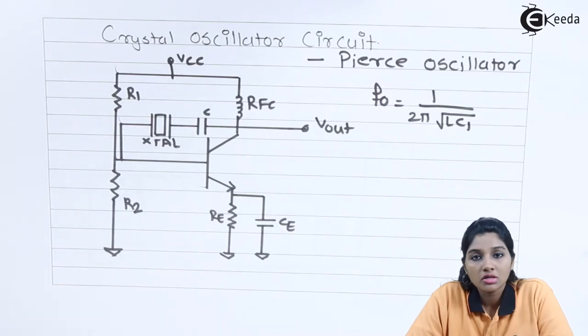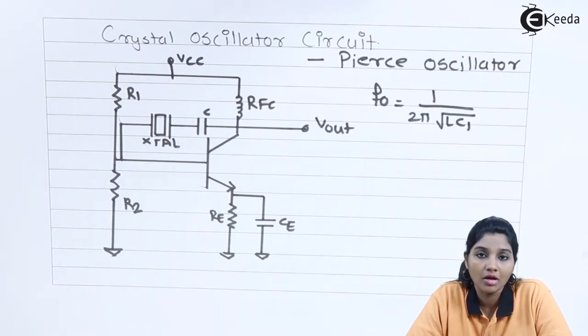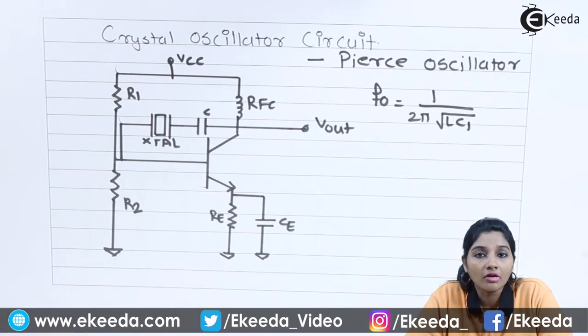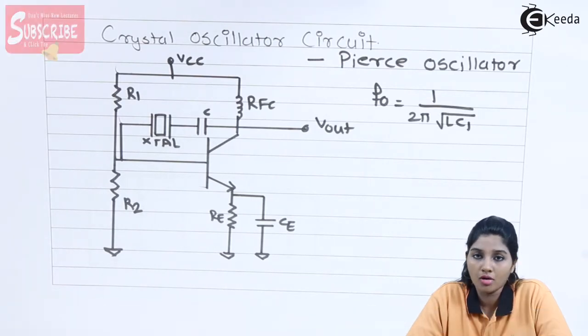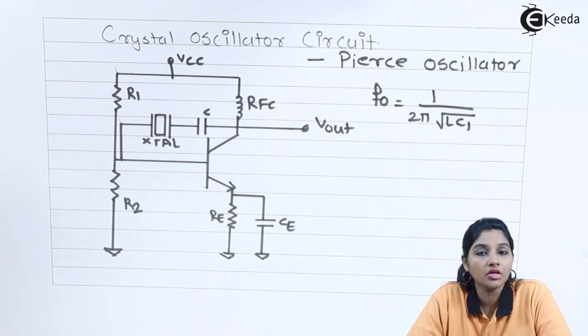In case of Pierce oscillator, as the frequency is set or provided by the crystal oscillator itself, therefore any variations in the supply voltage, change in the condition of biasing, or change in the transistor parameter will not affect the output frequency. That's why the crystal oscillator provides a stabilized and more accurate frequency output. And therefore, because of this reason, the crystal oscillators are used in applications like communication transceivers, digital watches, clocks, or time-based circuits.